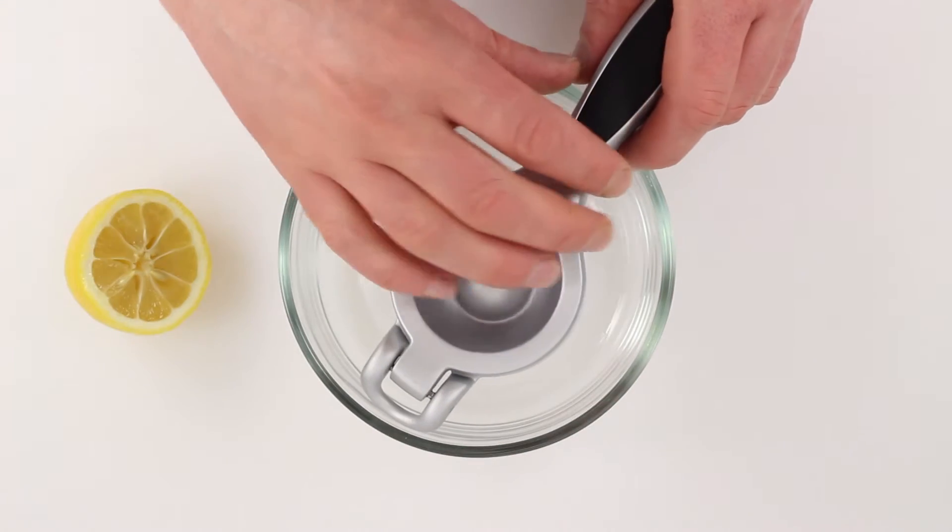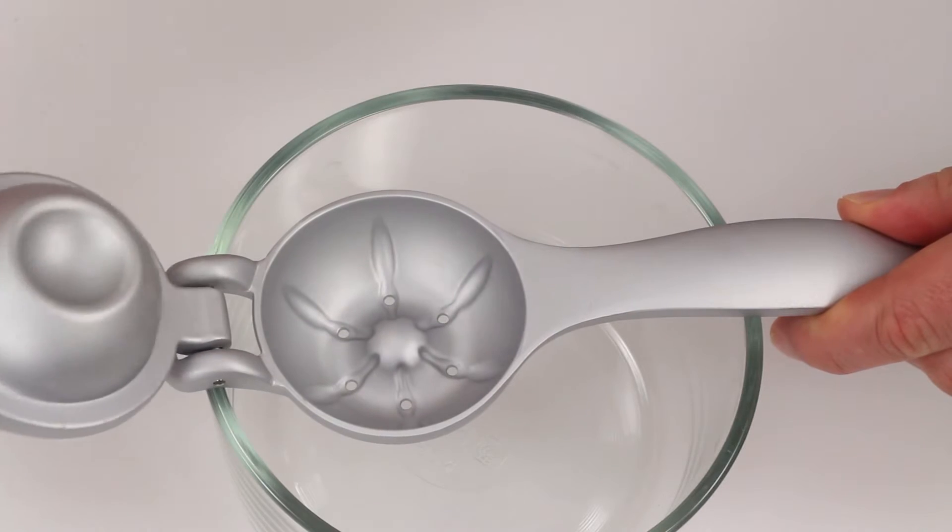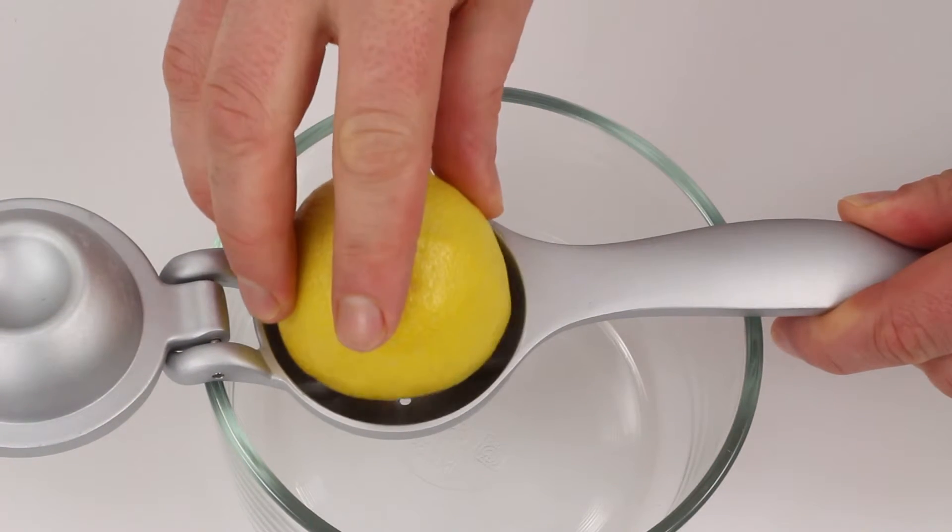Over the top of a bowl, spread open the press. Usually you'll place the lemon fleshy side down, right here.